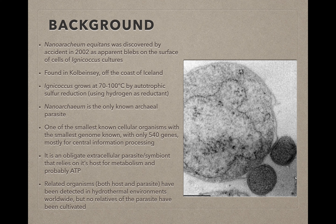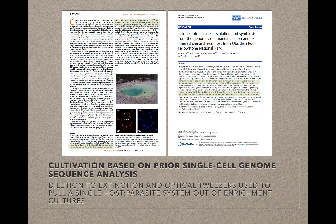This was the only cultivated member of the Nanoarchaeum where it was discovered, but since then, related organisms — both the hosts and the parasites — have been detected in hydrothermal environments all over the world, but none were successfully cultivated. Prior to the paper under discussion, what Anna-Louise did was to isolate a single cell out of an obsidian pool and sequence their genomes without cultivation. They used this genome sequence information to predict the metabolic requirements of that host-symbiont pair, and used that information to cultivate a similar set of organisms from a different spring.